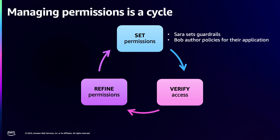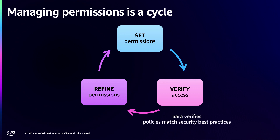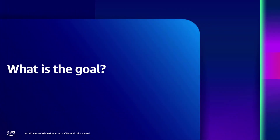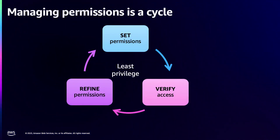As Sarah sets the guardrails when you set up accounts in AWS, Bob would author permissions within those guardrails for their application. Over time, as Bob is granting those permissions, Sarah wants to ensure that whatever is being granted matches her intent and the security best practices for their organization. Sarah also wants to ensure that whatever access is being retained across the account is actually intended — just the required ones — and she asks Bob to routinely fix permissions to remove whatever is not required. So Sarah monitors access and Bob works to ensure permissions are compliant.